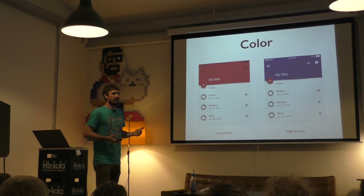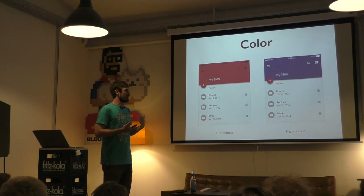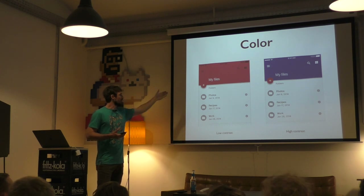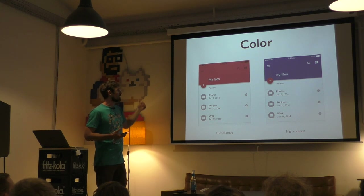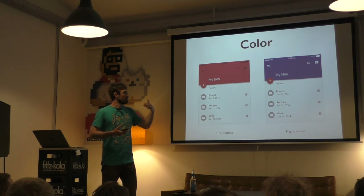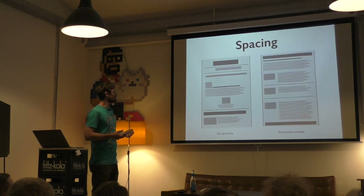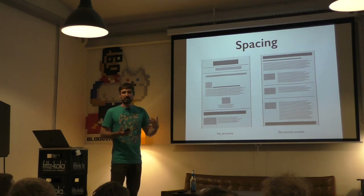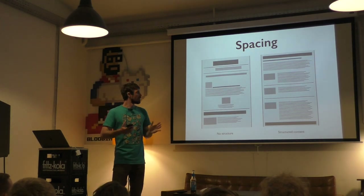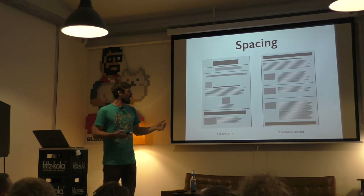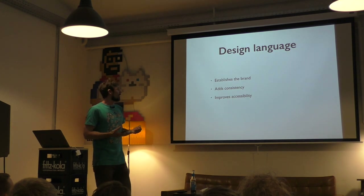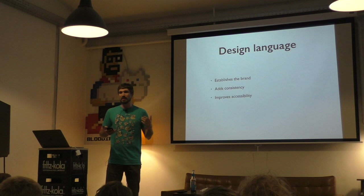Or take color — color is something we use to emphasize things and bring attention. In this example from Material UI, low contrast means you don't see the button because it's the same color as the header. On the second example, using the opposite color, you instantly see it and it focuses your attention on the button. The same goes with spacing: spacing gives us structure. If you don't use spacing right there's no structure, but put spacing in the right places and suddenly it's structured and easy to scan. Design language establishes a brand, adds consistency, and improves accessibility.